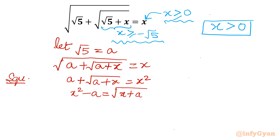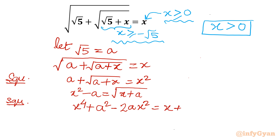Now squaring both sides again. Using the identity (a minus b) squared equals a squared minus 2ab plus b squared, we get x to the power 4 minus 2ax squared plus a squared equals x plus a. This equation is very important. Notice it is a quadratic equation in x: x to the power 4 is there, x squared is there, and x is there.